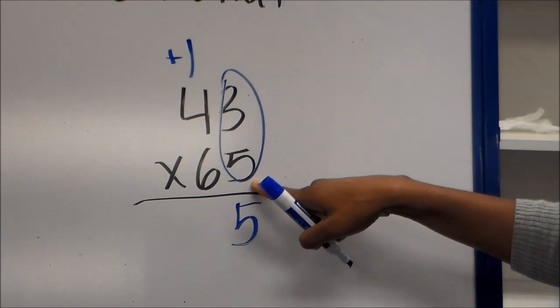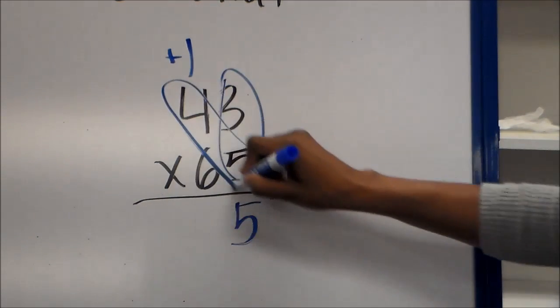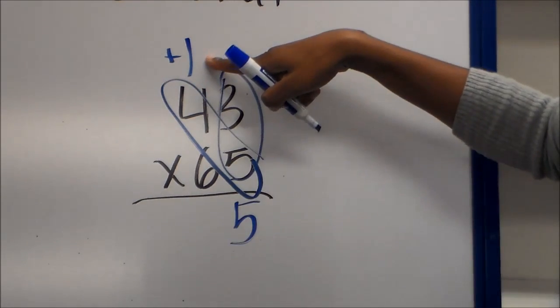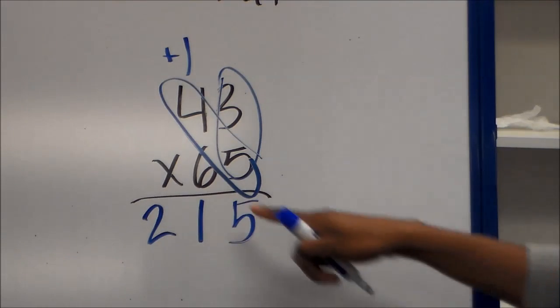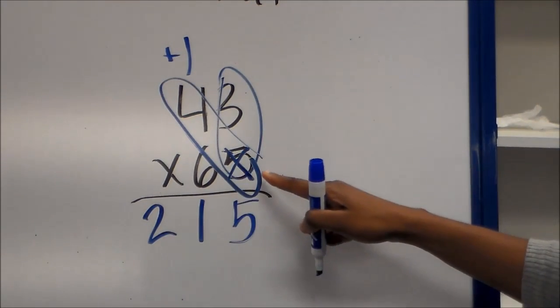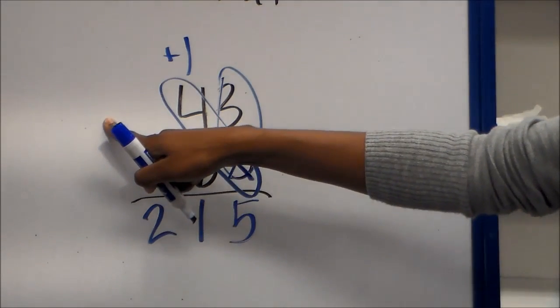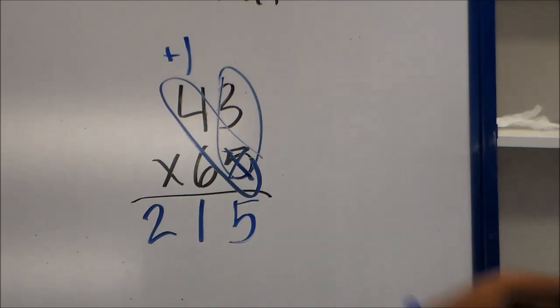Then we start from the ones place again on the bottom and multiply the next number. 4 times 5 is 20. Then we add this one and we have 21. After we're done with that, we cross out this 5 because we no longer have numbers on top that we have to multiply it by.